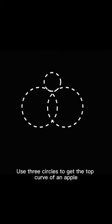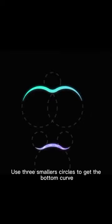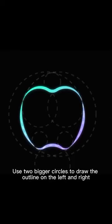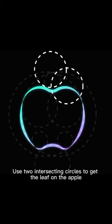Use three circles to get the top curve of an apple. Use three smaller circles to get the bottom curve. Use two bigger circles to draw the outline on the left and right. Use two intersecting circles to get the leaf on the apple.